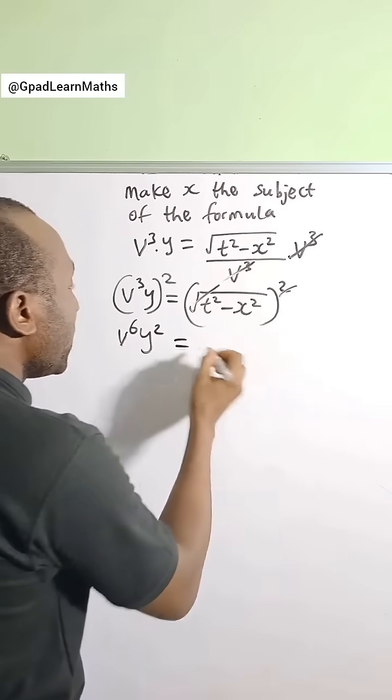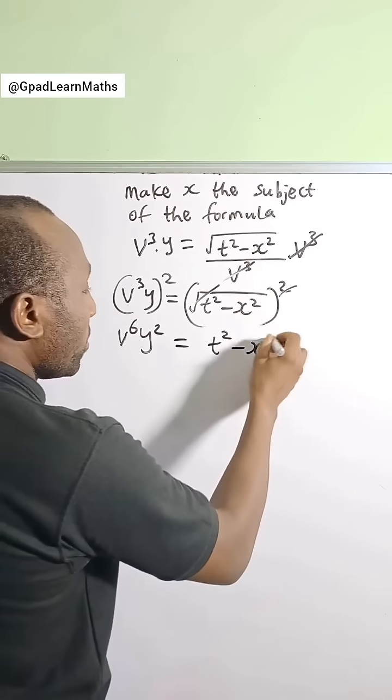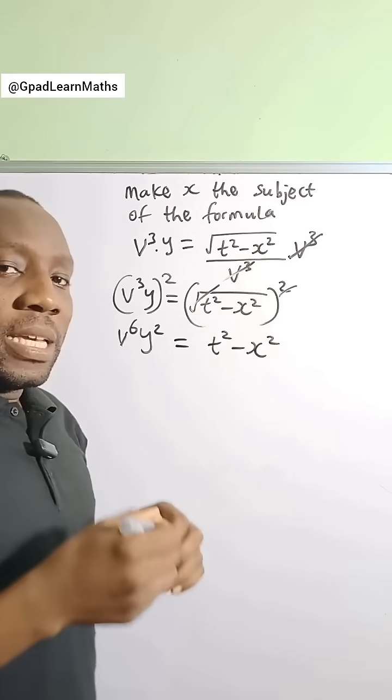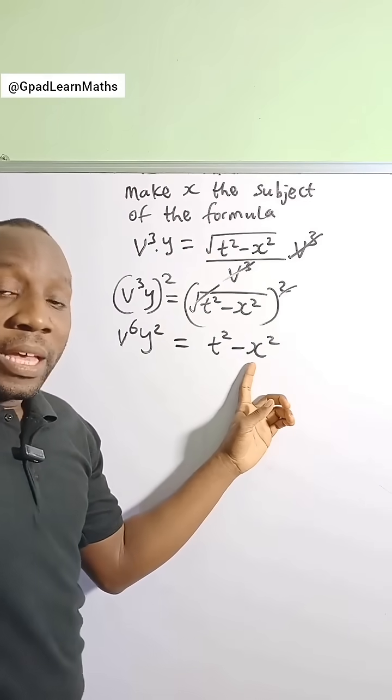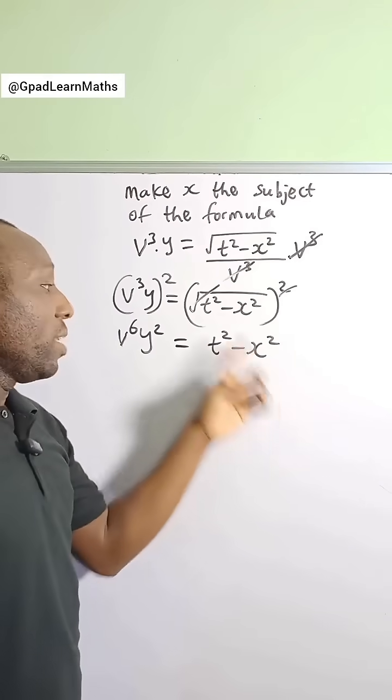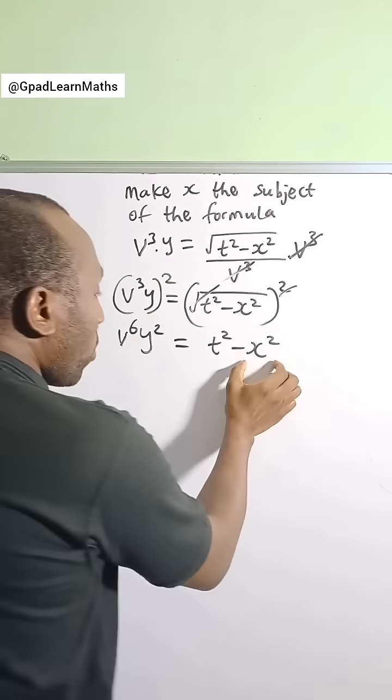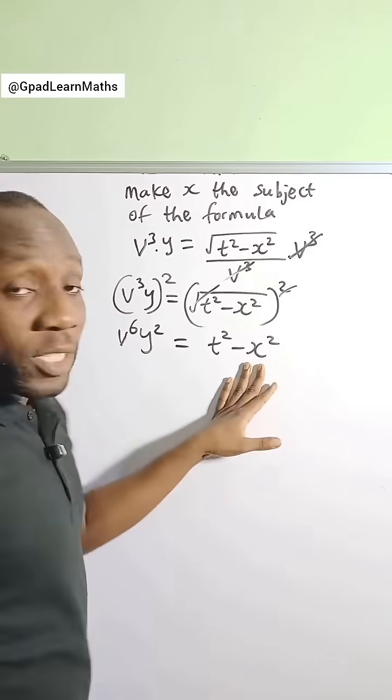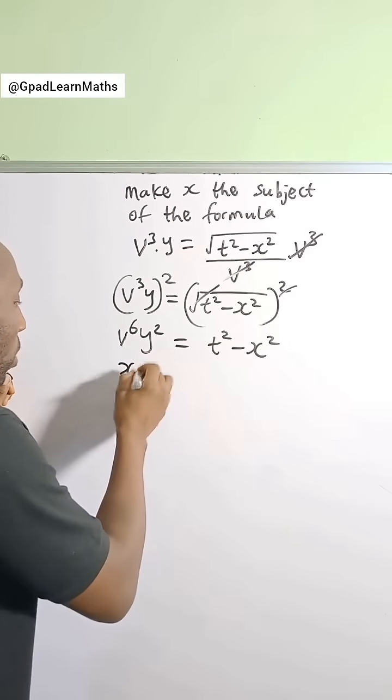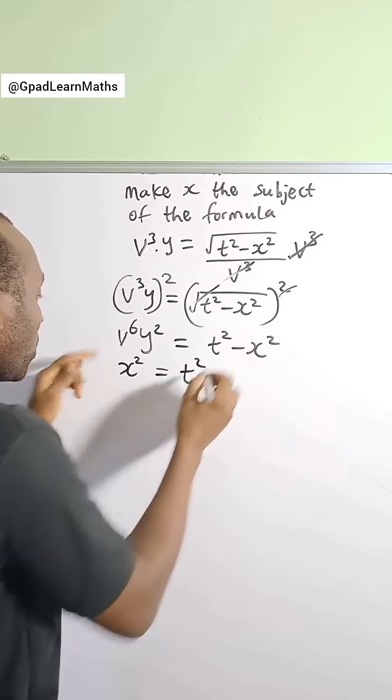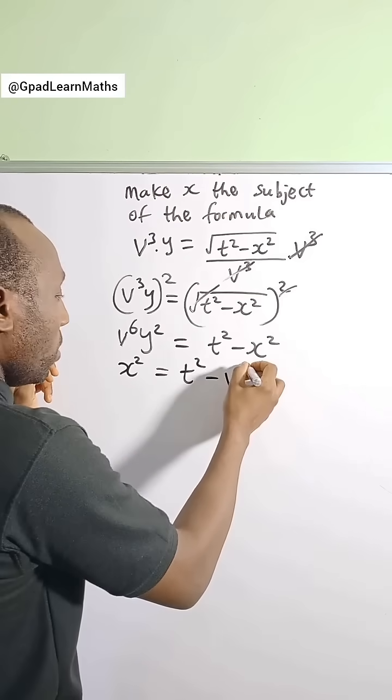So it is easier to just transpose negative x squared to the left hand side because it's going to make sure that the sign of x squared is positive. So that's going to be x squared is equal to t squared minus v raised to power 6 y squared.